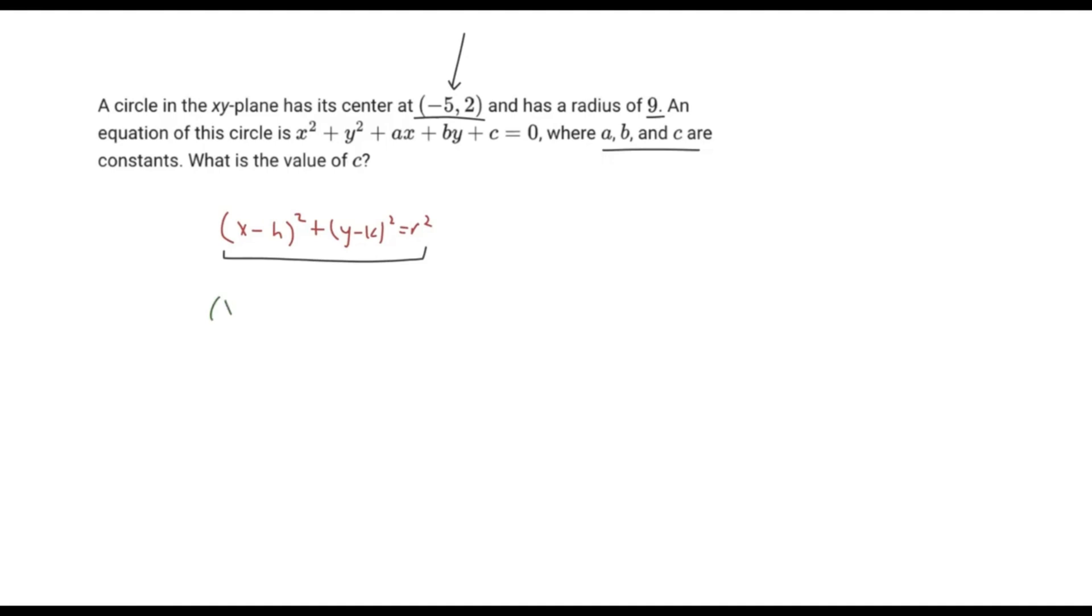And so here we'll have X, and because we have a -5, and the standard form here is a negative, in reality, H here, H is -5. So if you take a negative of a negative, that's in reality just positive. So (x + 5) here is going to be squared plus (y - K). K here is just positive 2 squared equals the radius squared. The radius we know is 9, so 9² is 81.